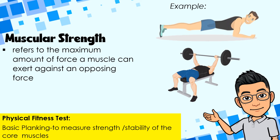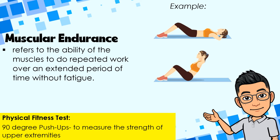Muscular strength refers to the maximum amount of force a muscle can exert against an opposing force. Examples include basic planking and bench press. For the physical fitness test, we have basic planking to measure strength and stability of the core muscles, and 90-degree push-ups to measure the strength of the upper extremities.